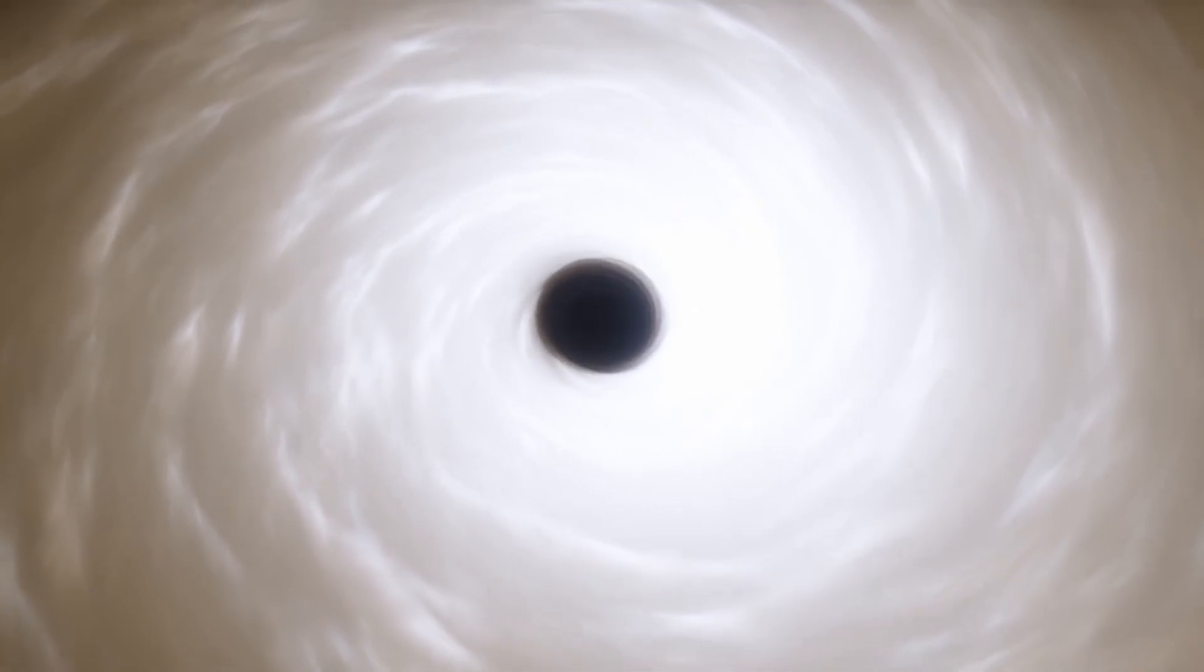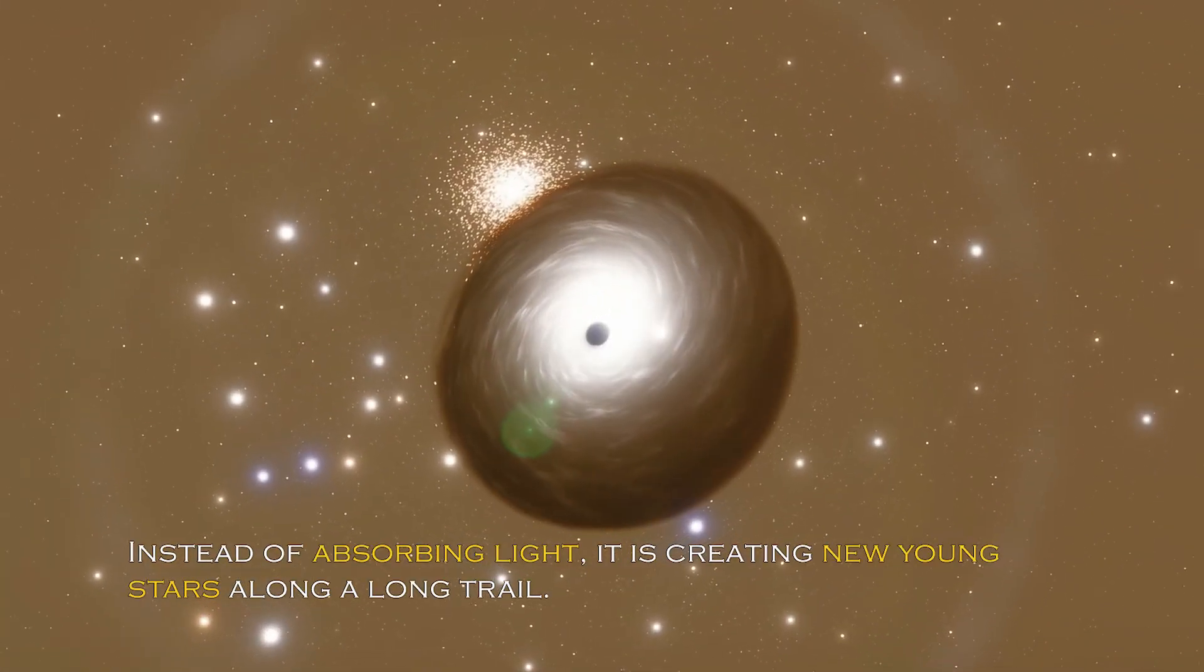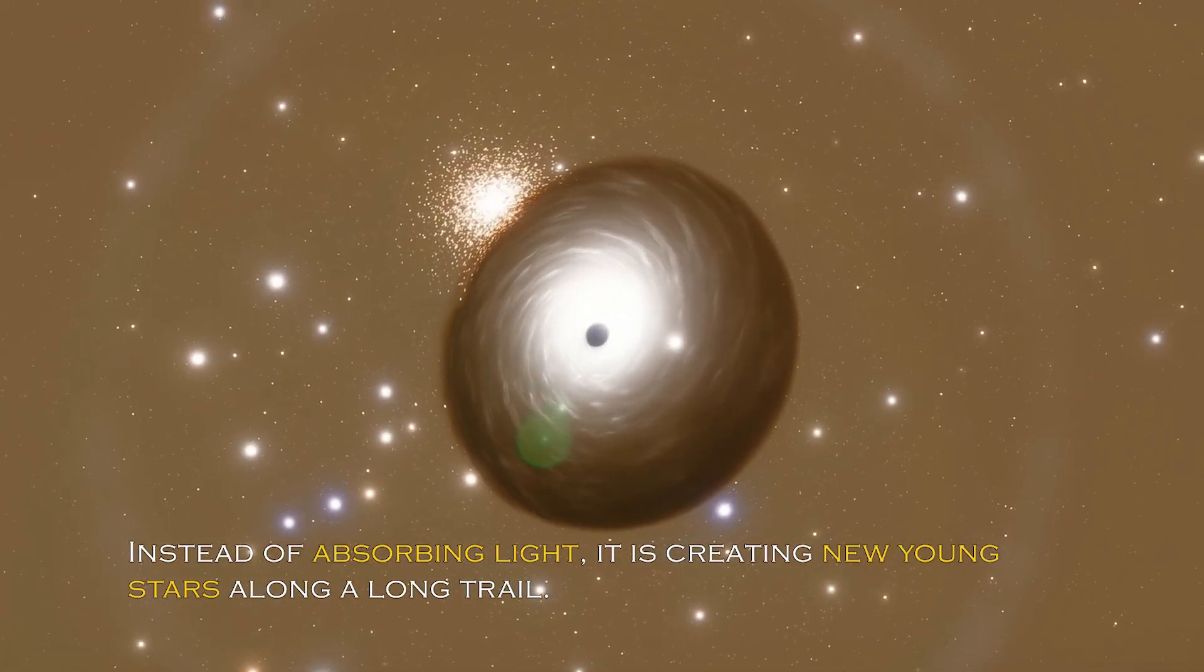Black holes are generally thought of as huge entities that pull everything including light towards them. But the recently observed black hole appears to be having the opposite effect. Instead of absorbing light, it is creating new young stars along a long trail.